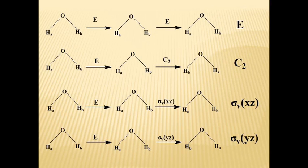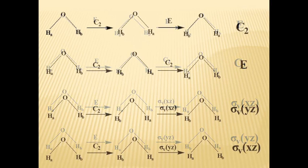The last case in the E row: when E is operated followed by σV(YZ), the final result will be σV(YZ). From this, we can observe that when any operation is followed by the identity operation, it does not bring any change in the positions of the molecules — it remains as the initial one.